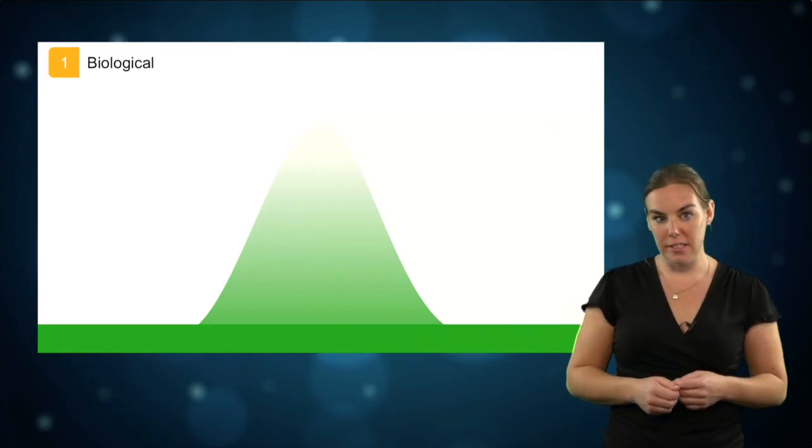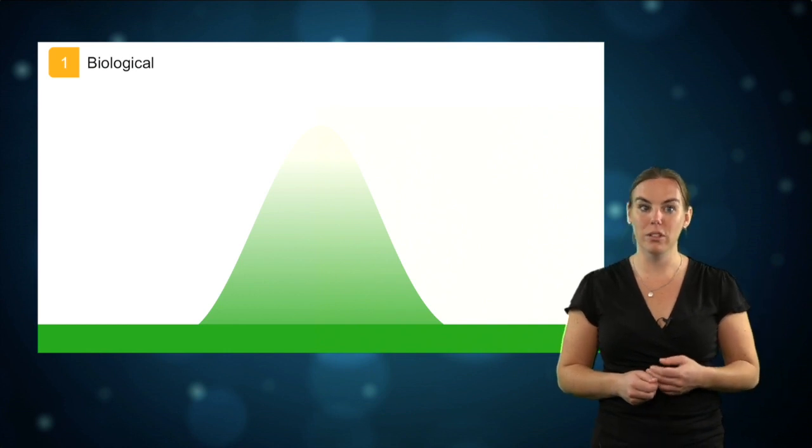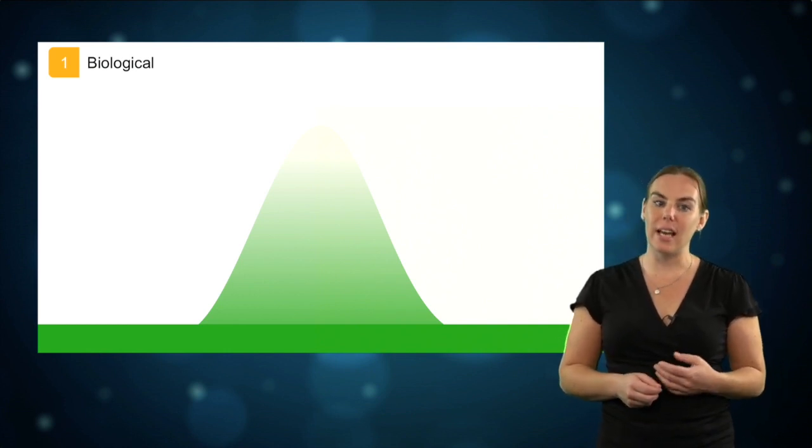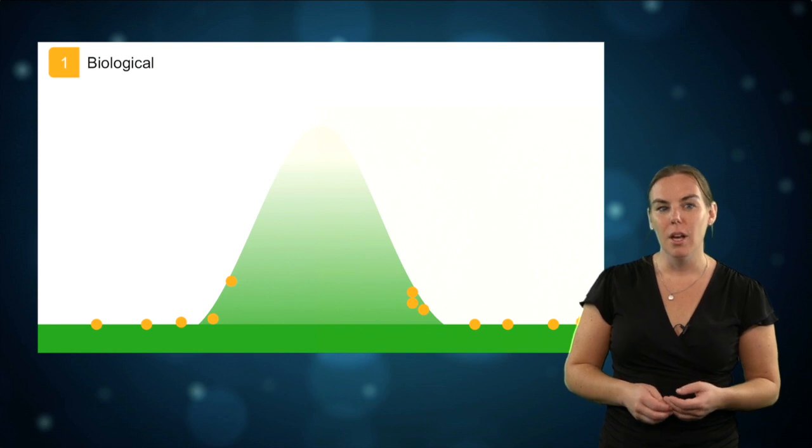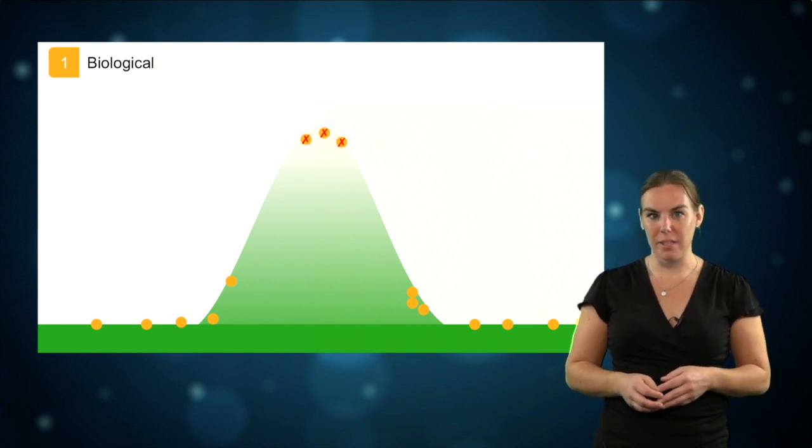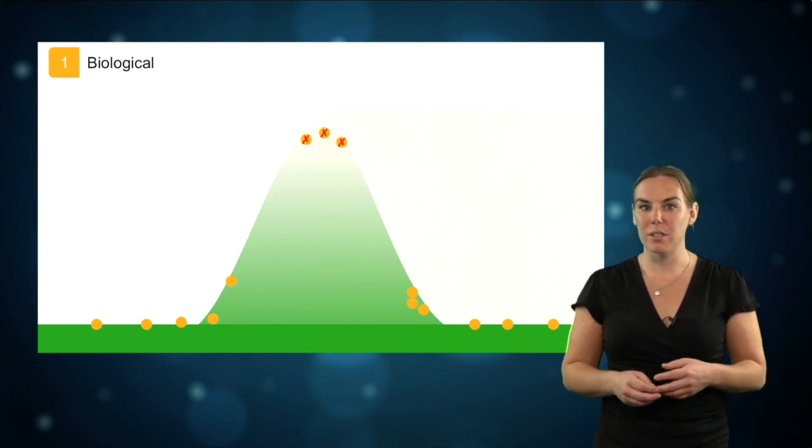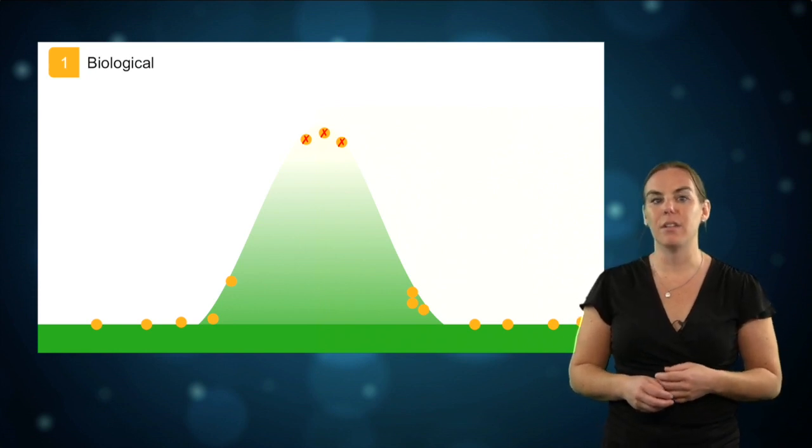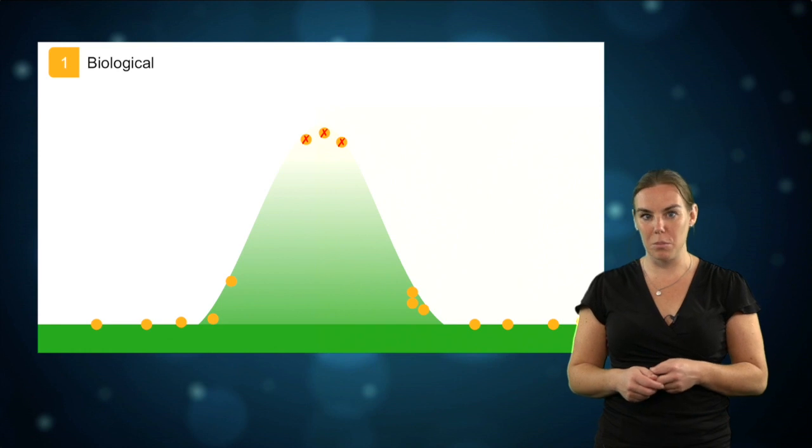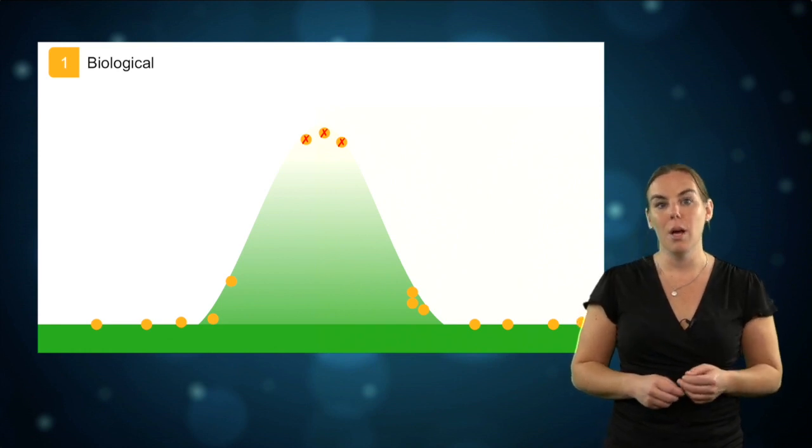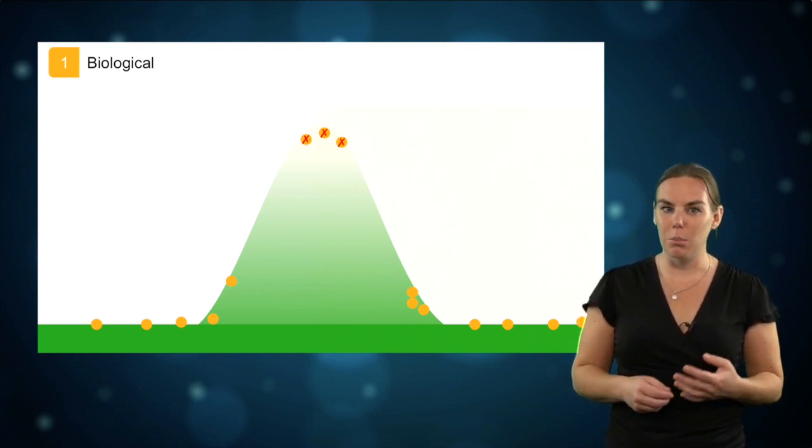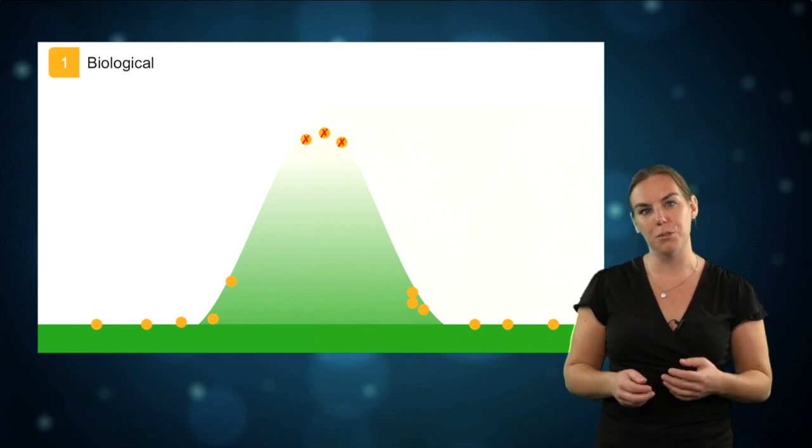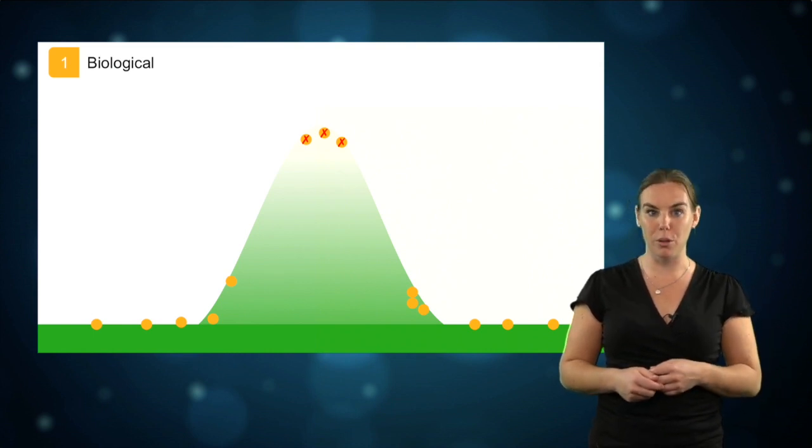Depending on the species distribution modeling algorithm that you want to use, you might not only need data of where a species occurs, but also data for where a species does not occur, or absence data. We will look at the assumptions and criteria of the different algorithms for species distributions in the next module, but I would like to explain here a little bit more about the difference between true absence data and pseudo-absence data.